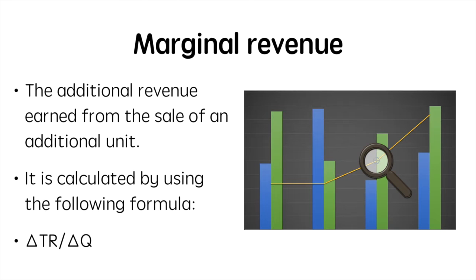Marginal revenue is equal to the additional revenue earned from the sale of an additional unit. You can calculate it by dividing the change in total revenue by the change in quantity. We need to understand this at a basic level for now, but we'll be building on this as we progress.